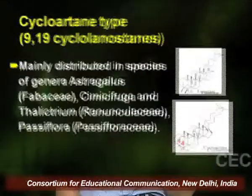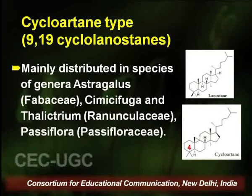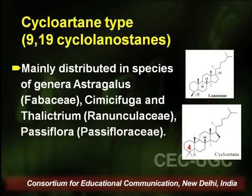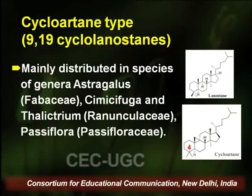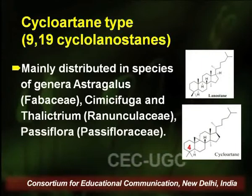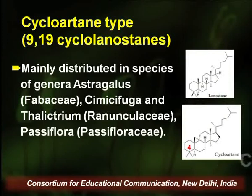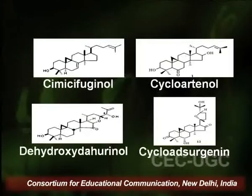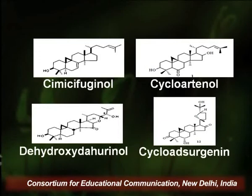The cycloartane type is found in species belonging to genus Astragalus of family Fabaceae, and also in certain members of Ranunculaceae and Passifloraceae. These are also known as 9,19-cyclolanostane compounds, as there is a cyclopropane ring formed between carbon 9 and the 19th methyl group. They can be further classified on the basis of the number of methyl groups at the 4th position into dimethyl cycloartane, monomethyl cycloartane, and desmethyl cycloartane types of triterpenoidal saponins.